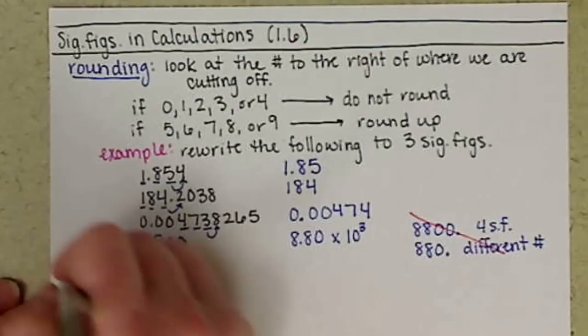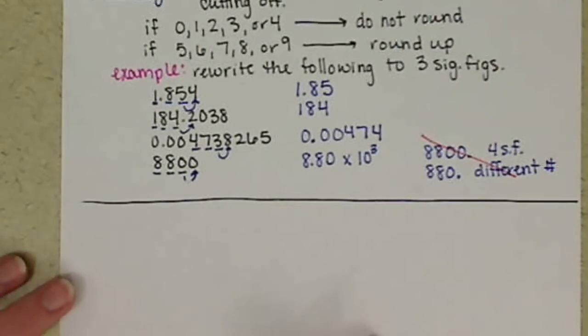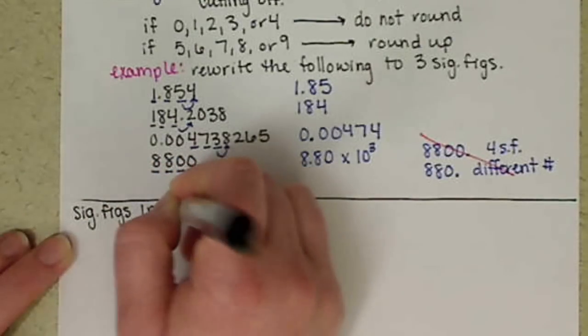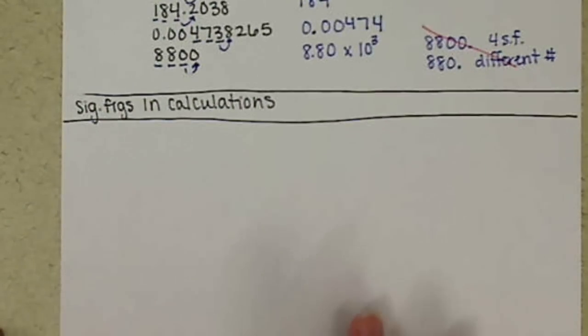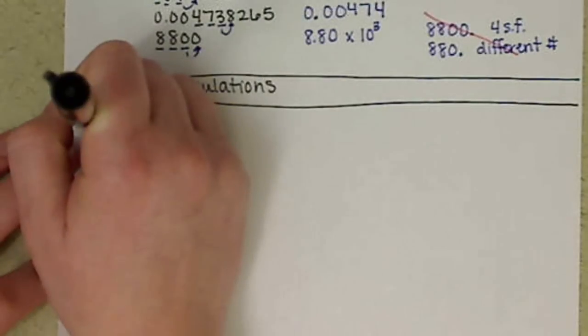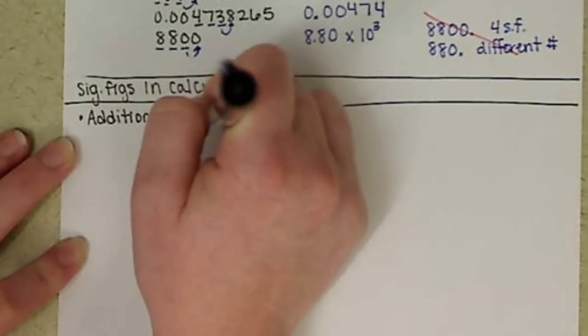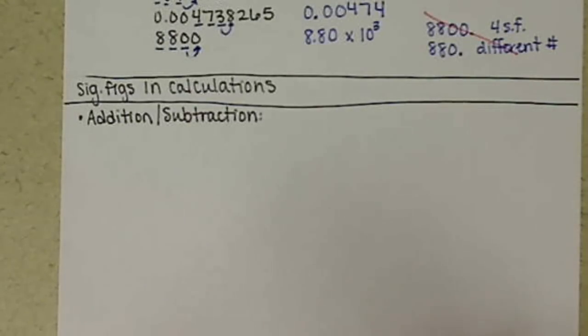So I've kind of ended my topic of rounding, so I'm going to draw a line across my paper. And now I want to talk about our sig figs and our calculations. So we have two different rules that we need to follow. The rules for cutting off numbers with multiplication and division are different from those with addition and subtraction. So let's start first with the addition-subtraction rules. For these, we want to express our final answer to the lowest number of decimals that were used.